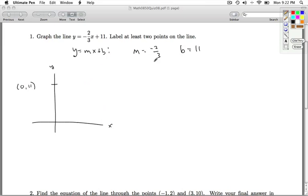The slope, negative 2 thirds, tells us that this is the rise over the run, which means that we're going to go down two units and then over to the right three units. So if we go down two units and over to the right three units, where are we going to end up?